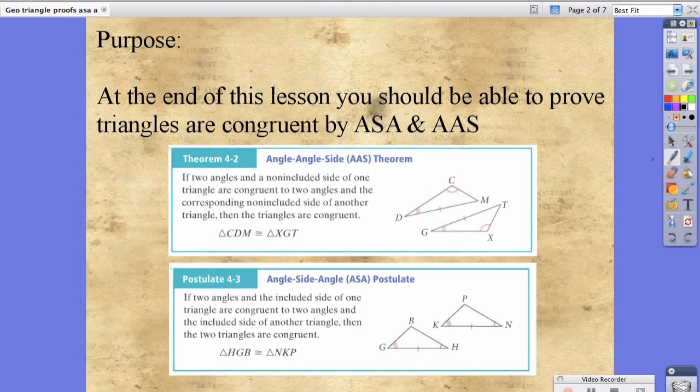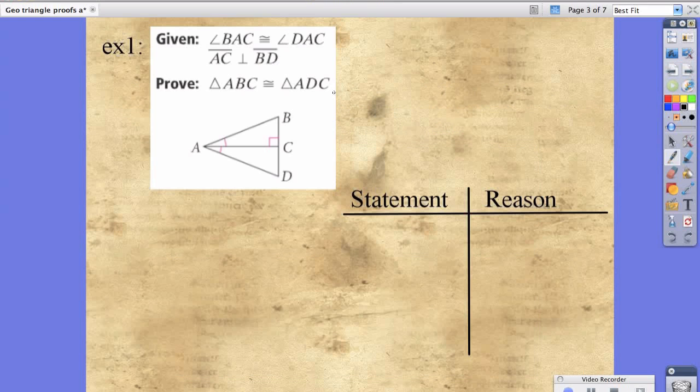It's important to mention in the angle-angle-side theorem, it has the two angles, and the side that's included is not in between them. Hence, the reason why the side is listed on the outside of the two angles. In postulate 4.3, angle-side-angle, the side is listed in the middle, and if you look at the angles mentioned, that side is in between the two angles. That's the difference between the two.